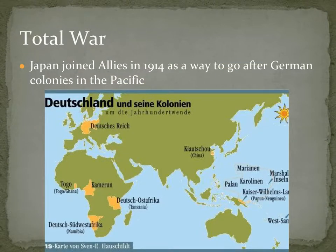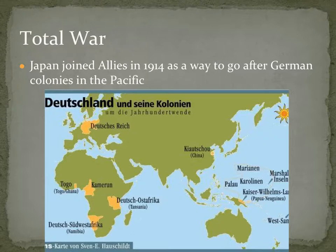Japan actually joined up with the Allies in 1914 as a way to go after German colonies in the Pacific. Japan during the early 20th century was becoming an imperialist nation — after the Meiji Restoration and rapid industrialization, Japan was desperate for natural resources. This is a little fact to keep in mind as we move into the aftermath of World War I and into World War II, because Japan is expanding in the Pacific and used World War I to its advantage.